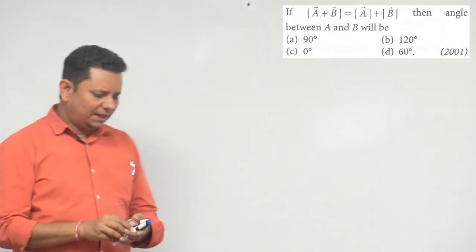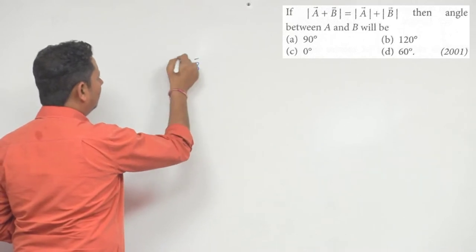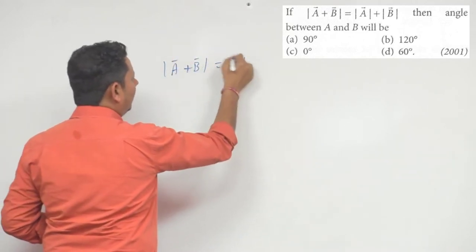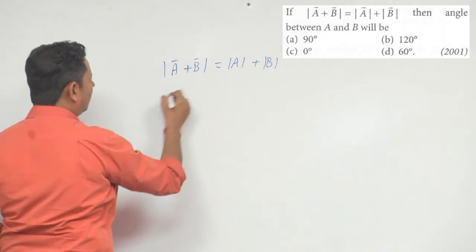Now, vectors ka sawal hai, simple sawal hai. It says hum hai A plus B ka magnitude is equal to A ka magnitude plus B ka magnitude. Isko A plus, isko agar ham expand kare.